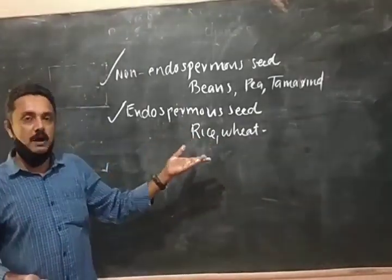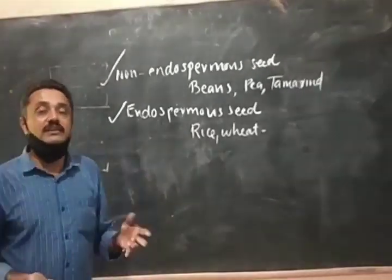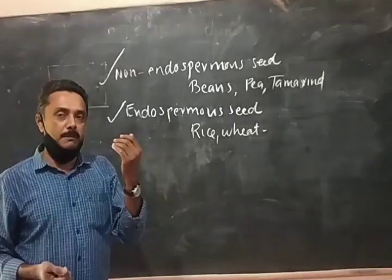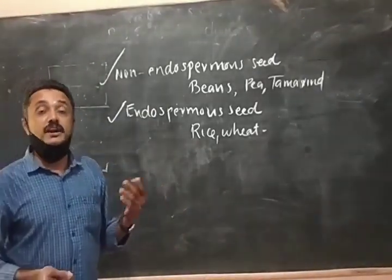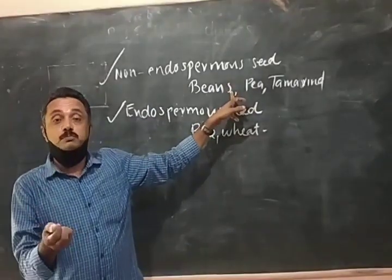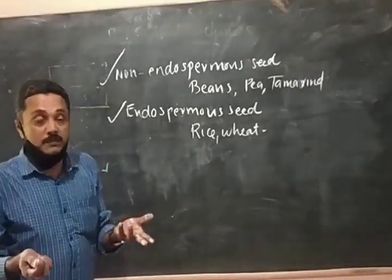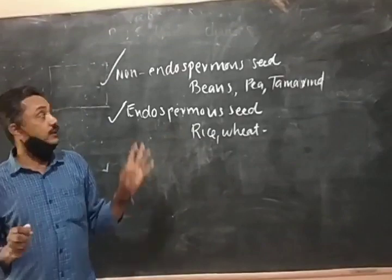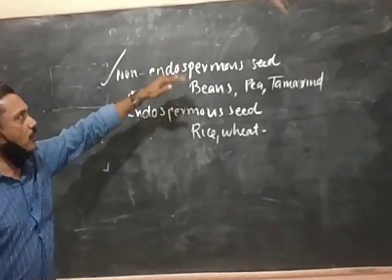The endosperm stores food material that may differ from plant to plant. In rice it is starch; in wheat it is protein; in coconut it is lipid or oil. In most monocot seeds, food is stored in the endosperm. In dicot seeds where there is no endosperm, the food material is stored in the cotyledons. So in dicot plants the cotyledons are somewhat larger. The endosperm may be present or absent depending on the plant.